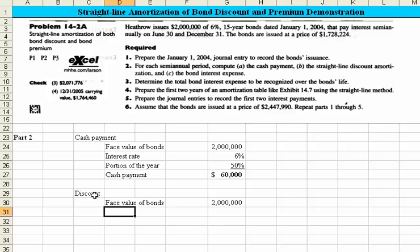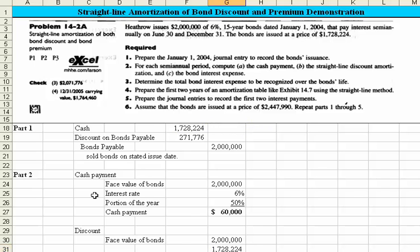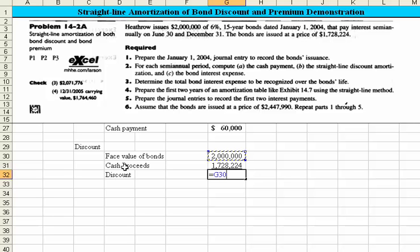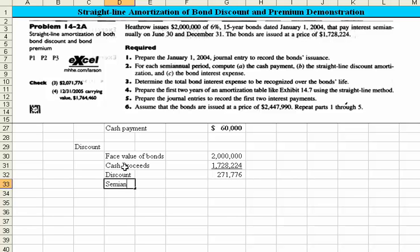We have the face value of the bonds, and we know that the cash proceeds received were $1,728,224. The amount of the discount was equal to the face value less the cash proceeds. We also know these are 15-year bonds with two periods per year, so we need to determine how many semi-annual interest periods we have — that's 15 years times 2, giving us 30 periods.